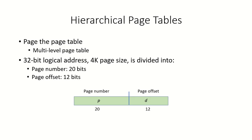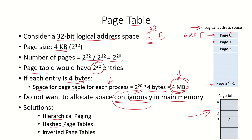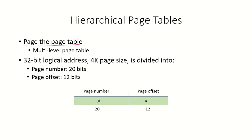In a hierarchical page table, the technique is to page the page table itself. This large page table — which has one entry for each page, with the last entry for page number 2^20 minus 1 — requires 4 MB of space. The idea is to page this page table as well, placing it into different pages. This gives us what is called a multi-level or hierarchical page table.